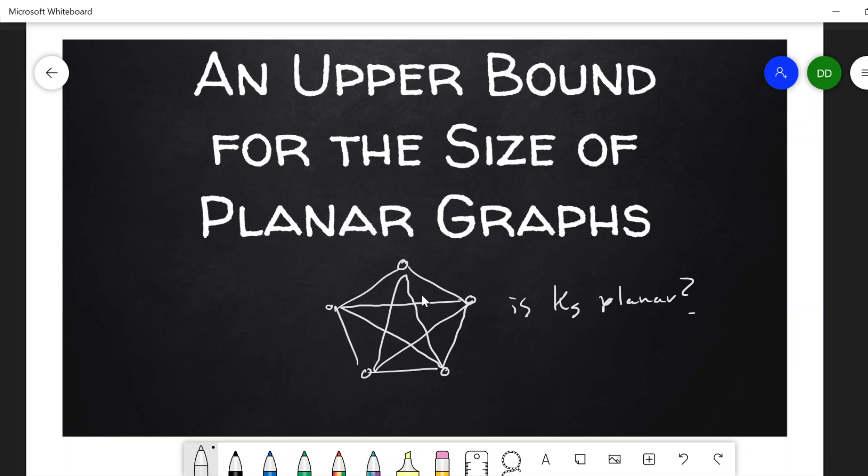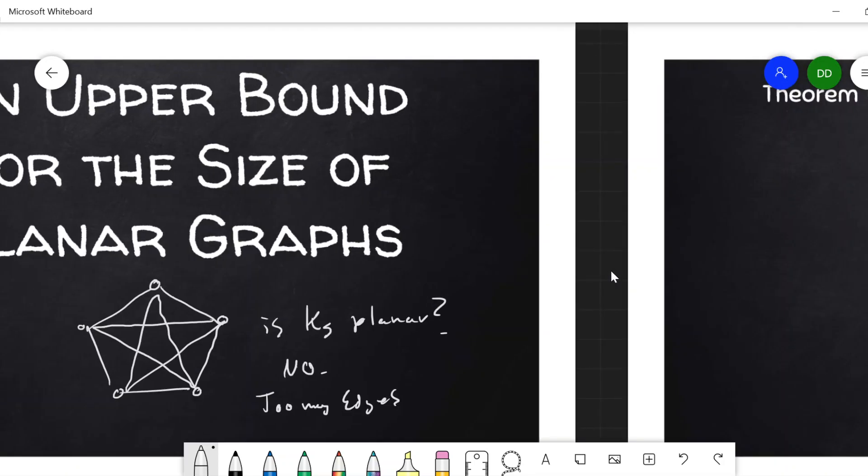So we're going to see in a second that we can prove K5 is not planar. The idea is there's too many edges. It just has too many edges for it to be planar. It breaks an upper bound on the size of any planar graph. So this is the result we're after is an upper bound for the size of any planar graph.